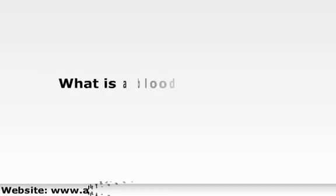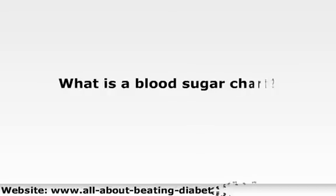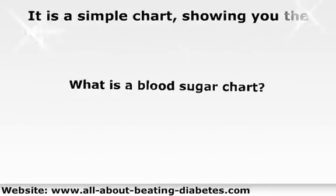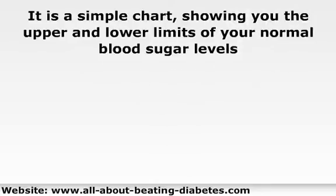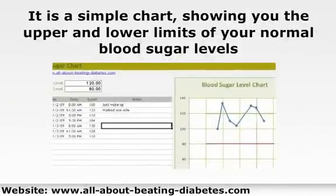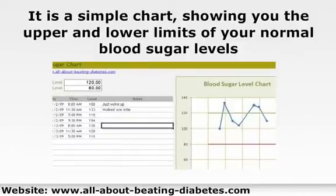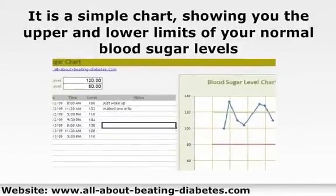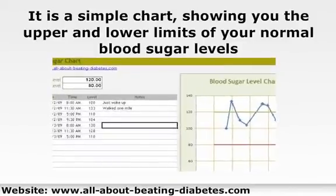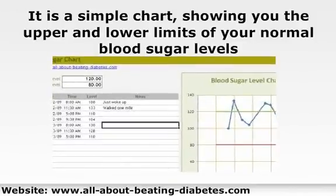What is a blood sugar chart? It is a simple chart showing you the upper and lower limits of your normal blood sugar levels. If you enter your blood sugar reading, it will automatically show you whether they are high, low, or within the normal limits.